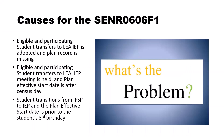Let's review common causes for the SENR 0606F1. The number one most common scenario: an eligible and participating student transfers to the LEA, the IEP is adopted, and the plan record is missing. The second cause: the student transfers to the LEA, an IEP meeting is held, but the plan effective start date is after census day. Because this is an F1 error, the plan effective start date must be before census day. Even if you have a meeting and a new plan within 30 days, if the student enrolled before census day and the 30 days falls after census day, for Fall One reporting the student has no plan at your LEA — so you need an adopted record in that time frame.